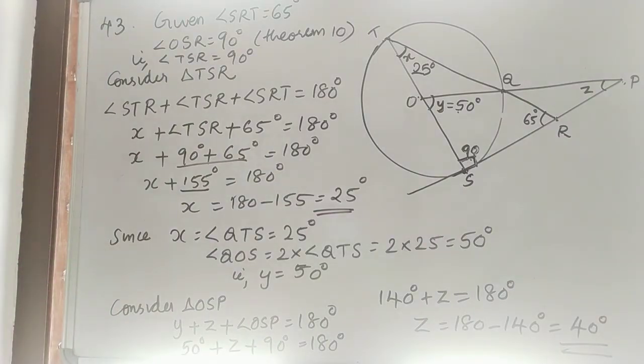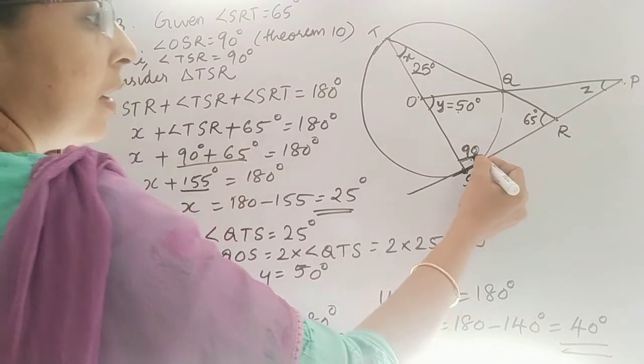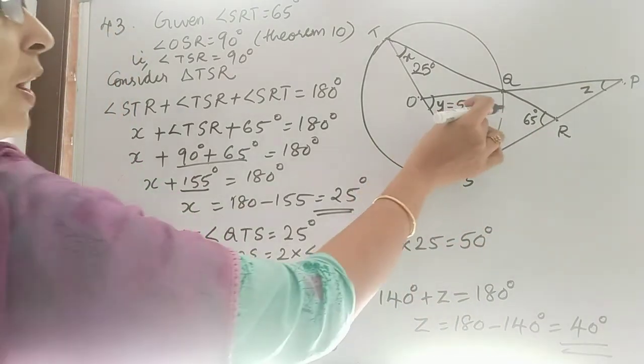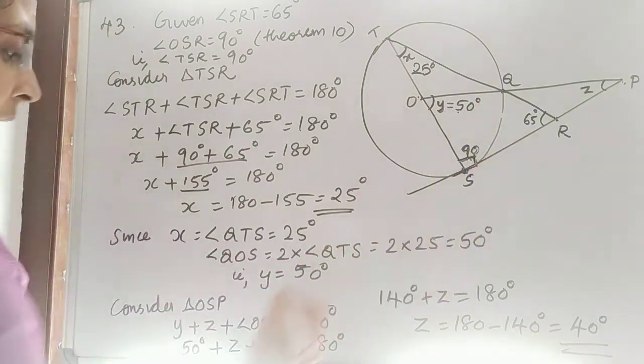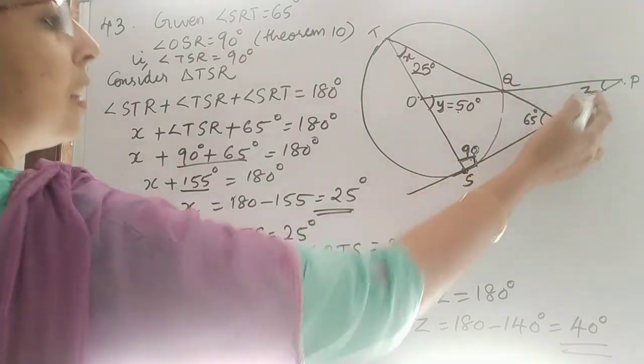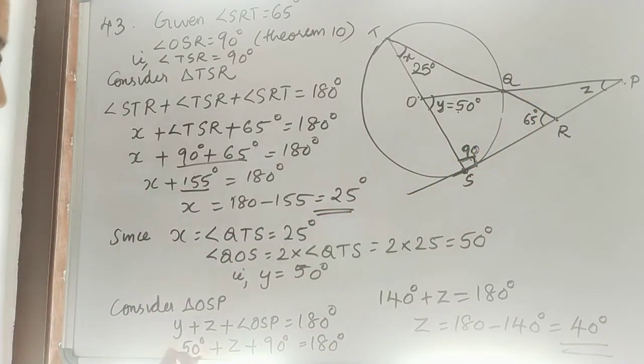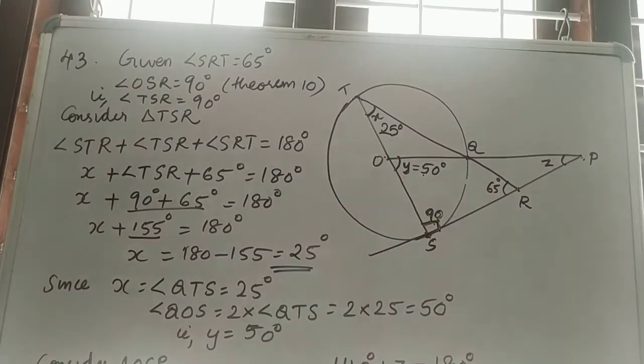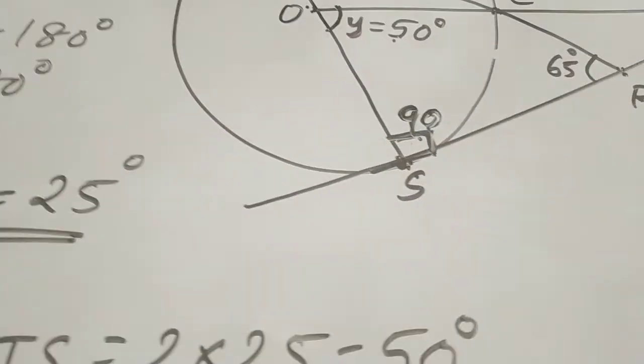Sum of angles of a triangle is 180 degrees. That is Y plus Z plus 90 degrees equals 180 degrees. So 50 plus 90 plus Z equals 180 degrees. So Z is equal to 180 minus 140, which is equal to 40 degrees.